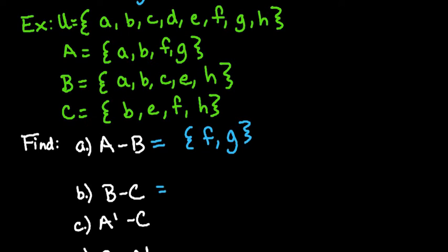The second one we're going to look at is B minus C. So now we're going to look at these two sets, and we're going to cross out anything that they have in common. So B is in common, E is in common, and H is in common.